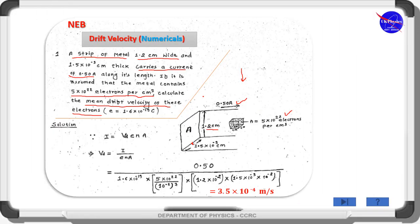In the question, almost all parameter values are given, so we can directly use the famous expression for drift velocity: i = nAve. From this expression, we can calculate the drift velocity vd = i / (neA).